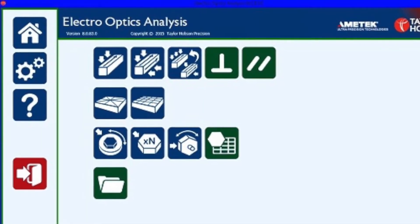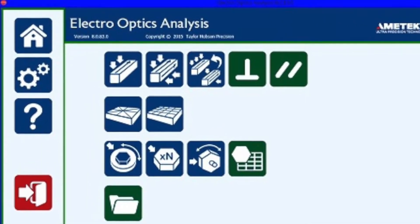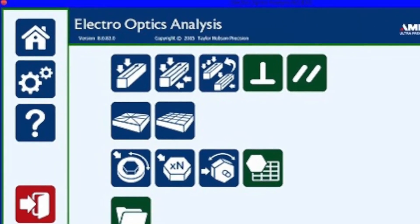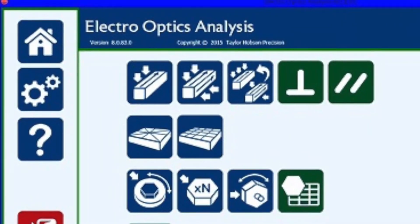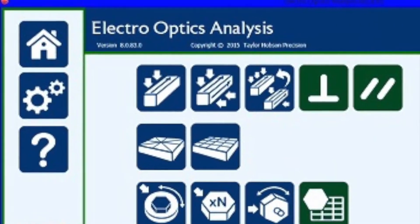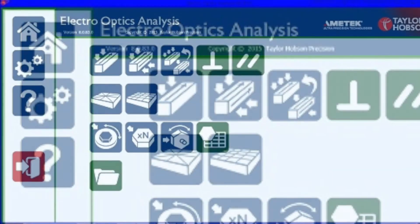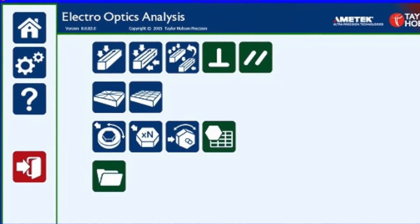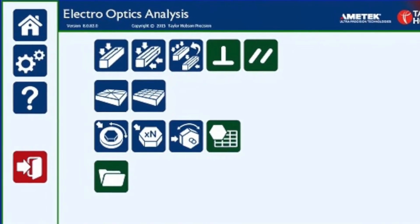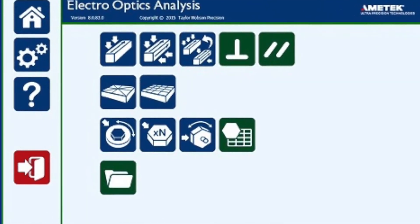Now let's look at the left-hand side icons. Note they are the same or similar icons as used in the Tallywell control software. So now we will start with one of the most popular applications: straightness.